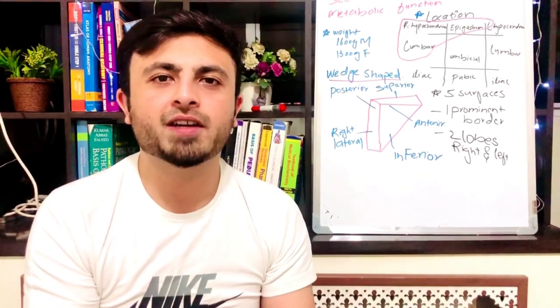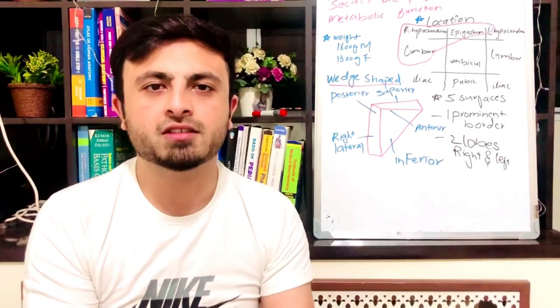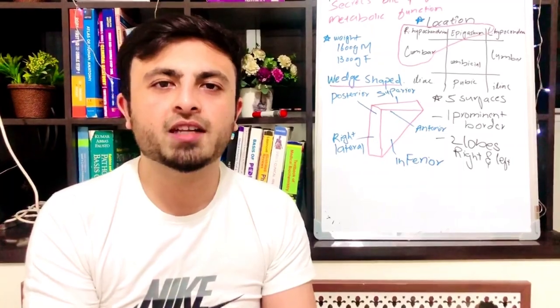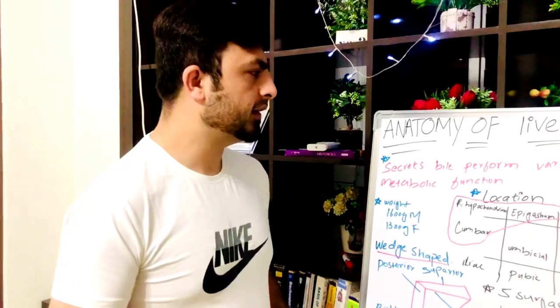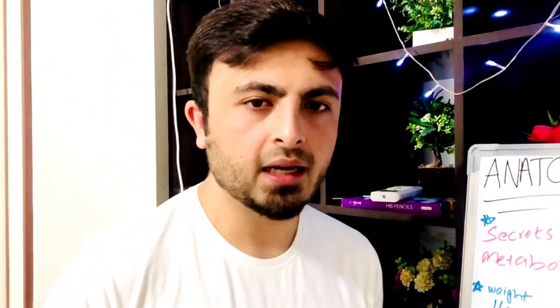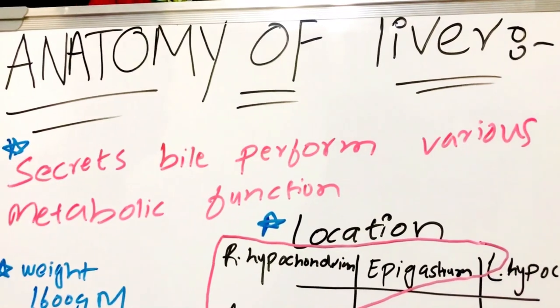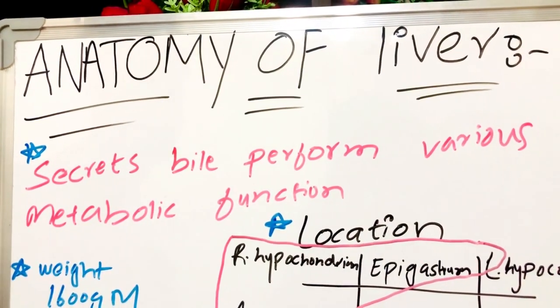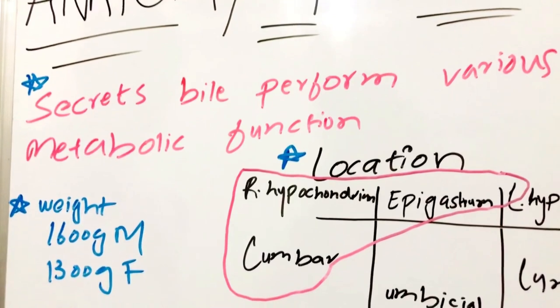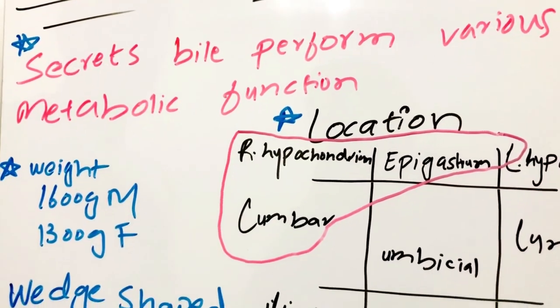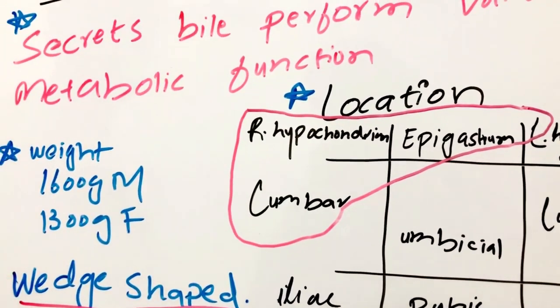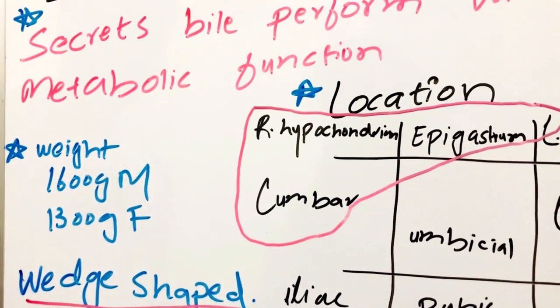Hello guys, we will continue our video lecture series on anatomy of the digestive system. Today we will discuss the anatomy of liver. The function of liver is to secrete the bile and perform various metabolic functions. It is also functional in the absorption of food — it secretes the bile into the small intestine for absorption. The liver weighs about 1600 grams in males and 1300 grams in females.